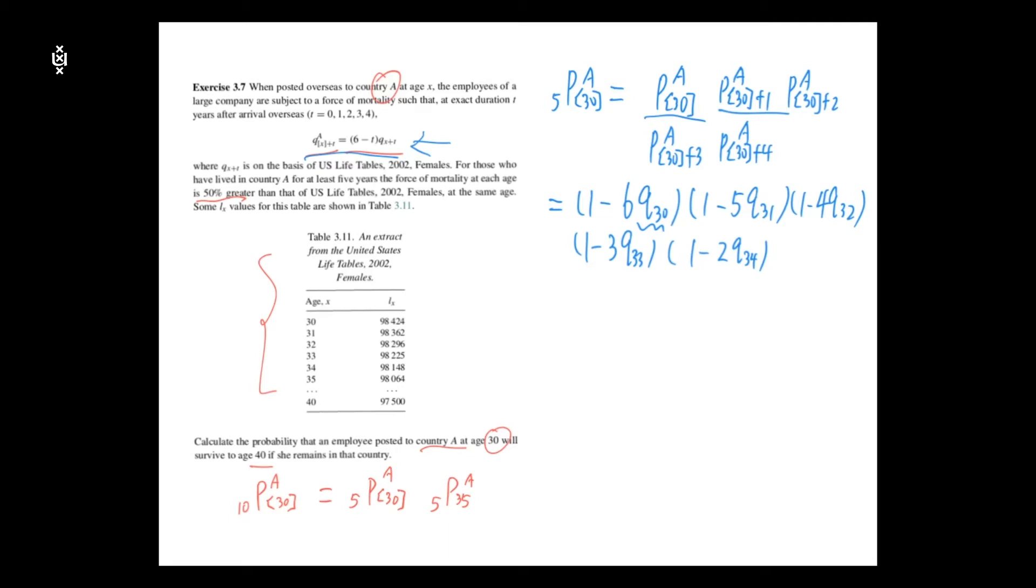Now for each of the terms here, we can calculate them using the U.S. life table. For example, q30 is L30 minus L31. The numerator is the number of people who died within age 30 and 31.